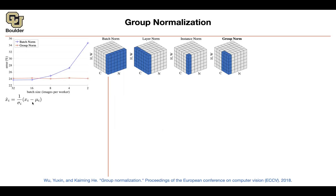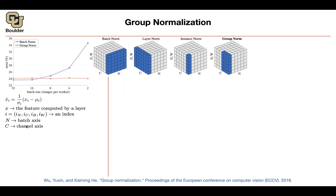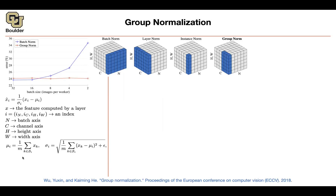Let's go through the math. You want to normalize your input Xi by subtracting the mean and dividing by the standard deviation — this happens regardless of the method. The index i is a multi-dimensional index covering n (batch), c (channel), h (height), and w (width). The only difference between these normalization methods is the set SI — the set of pixels used to compute mean and standard deviation — where m is the size of SI. For batch normalization, you fix the kc dimension to equal ic, and the rest are free, meaning you compute statistics over all dimensions other than c — over n, h, and w.